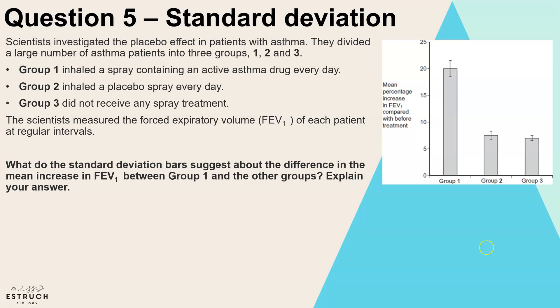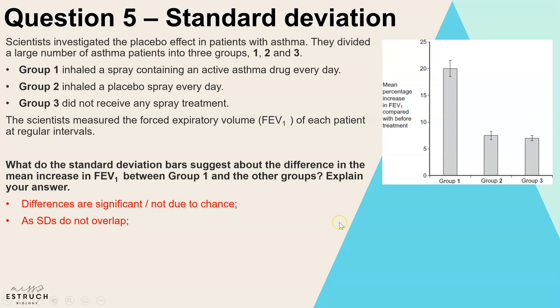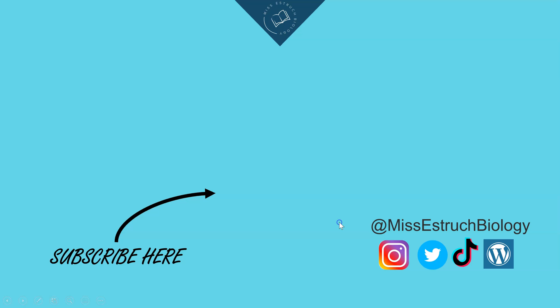So the differences between group one and the other groups are significant, or not due to chance, because the standard deviation bars do not overlap. That is it for the statistics questions walkthrough — I hope you found it helpful and best of luck with your exams. If you found this helpful please give it a thumbs up.